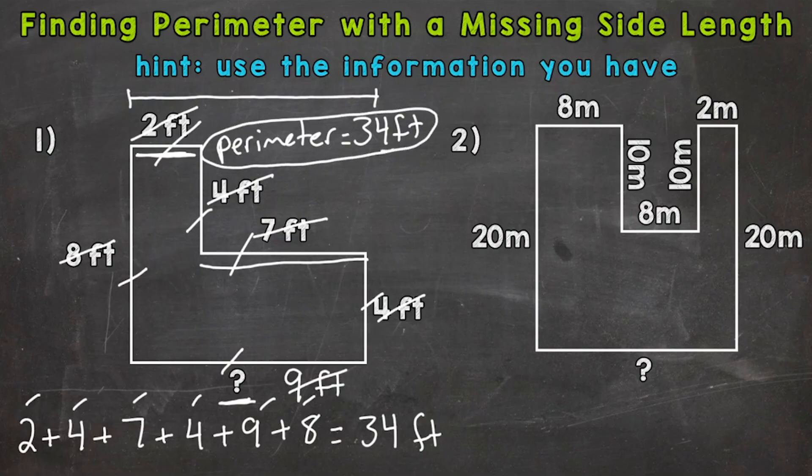So let's go to number two, where again, our missing side length is at the bottom. So let's take a look up top. And we have eight meters here, we're going to use this.